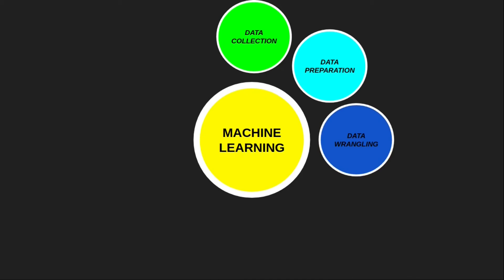The third step of the machine learning project development lifecycle is data wrangling. Data wrangling is the process of cleaning and converting raw data into a usable format — cleaning data to be used in the next step. In data wrangling, we do data cleaning, feature selection, and transforming the data into a proper format. Because the computer understands only numbers, we need to convert all string data, image data, audio data, video data, and text data into numerical format. Those processes are done in the data wrangling step.